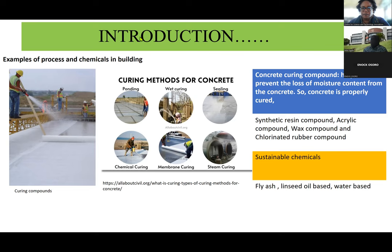Concrete curing helps prevent the loss of moisture content from the concrete so it is properly cured. There are different chemicals involved — for example, synthetic resin compounds such as acrylic compounds, wax compounds, and chlorine rubber compounds. But when you talk about sustainable chemicals, we're talking about their alternatives which can be used in place: things like fly ash, linseed oil-based compounds, and water-based curing processes, which are used in place of what is currently being used in the market.